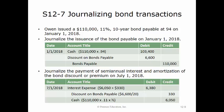The discount on bonds payable is credited for $330, which equals the $6,600 discount divided by 20 semi-annual periods. Cash is credited for $6,050, equal to the $110,000 face amount times 11% times one-half.